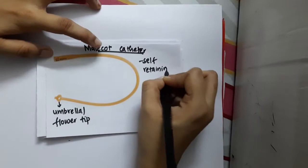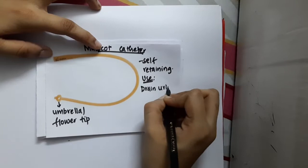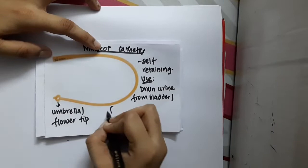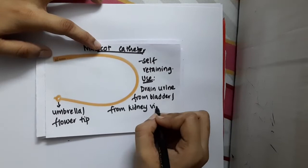is a Malecot catheter which is a self-retaining catheter. What is the use? The use is to drain urine from the bladder or to drain urine from the kidney